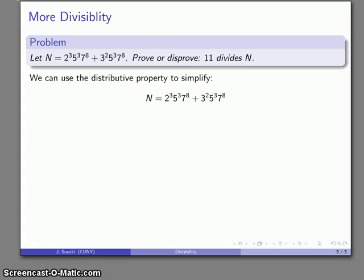I stare at this for a moment and notice that everything has—well, there's a 7 to the 8th in both of these, so I can factor that out. There's a 5 to the 3rd in both of those, so I can factor that out. Then I have what's left over: this 2 to the 3rd and 3 squared.